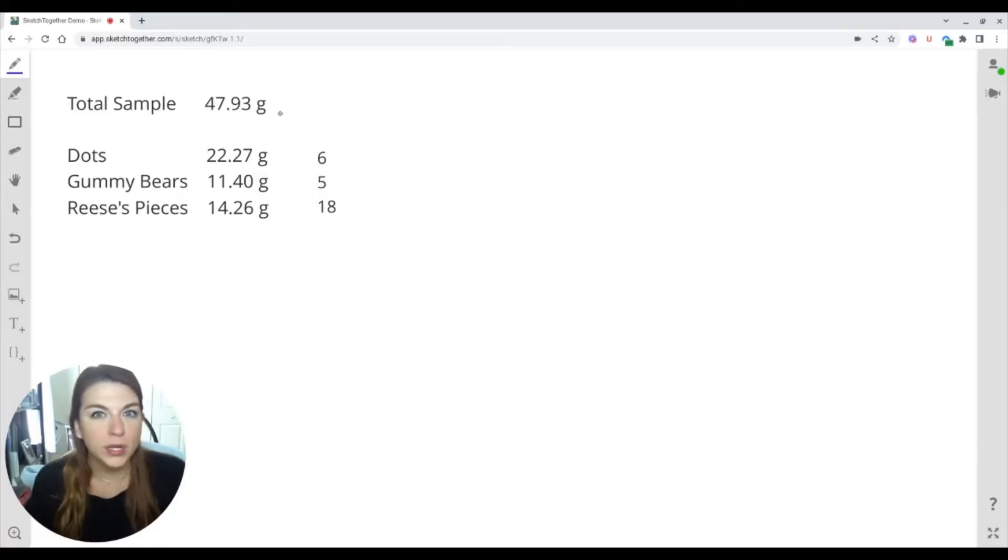All right, so let's do some calculations. We have a total sample of 47.93 grams. I have each of our samples' masses here, and then the 6, 5, and 18 represents the quantity or the number of atoms. Okay, so in total, that's 11 and 18, that's 29 atoms. If I did the math correctly, let me double-check on that. I'm not very good at mental math, so for the sake of accuracy, yep, 29.